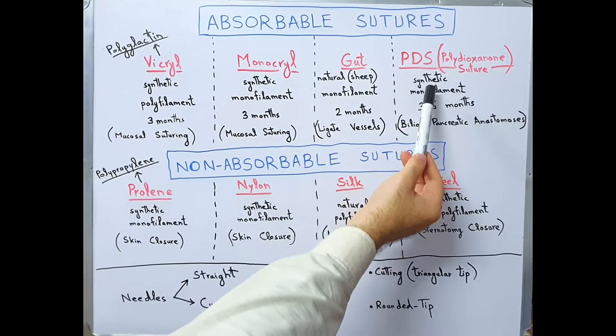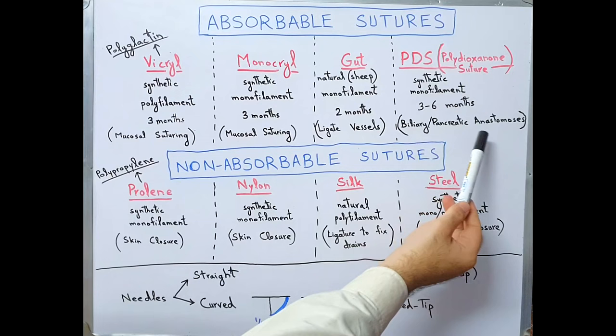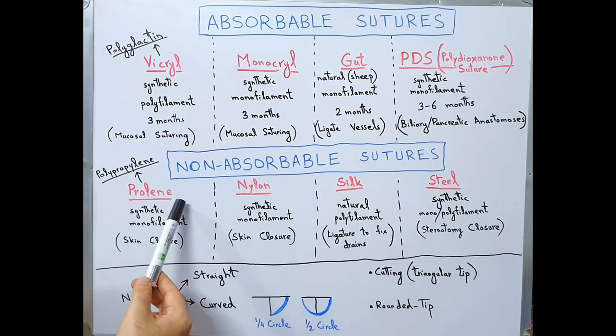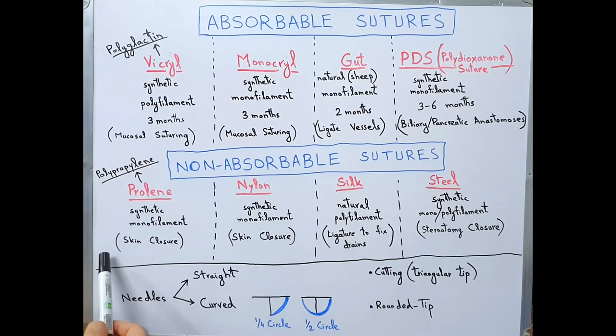Then we have PDS, polydioxanone suture. It is synthetic monofilament, lasts for 3 to 6 months in the body, and is used for biliary or pancreatic anastomosis. In the section of non-absorbable sutures, we have Prolene, also called polypropylene. It is synthetic monofilament, used for skin closure.